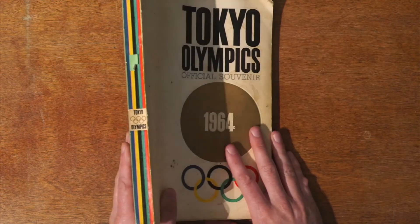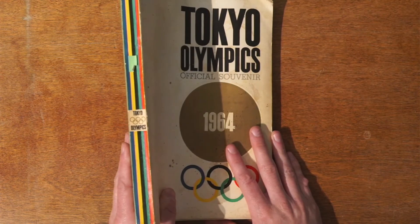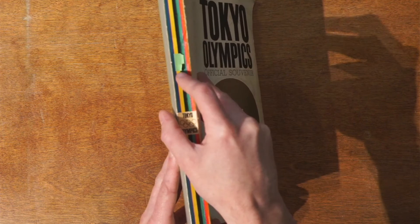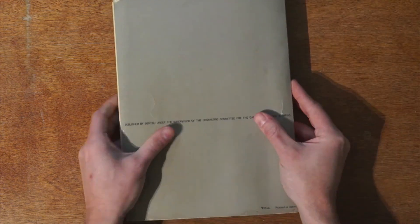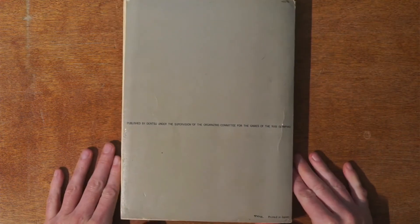You can see the spine and the thrift store sticker on the back. Now this might be a strange book to look through, but I kind of realized that sometimes the strange books, the stuff that's really weird, is the stuff that's most interesting to go through.